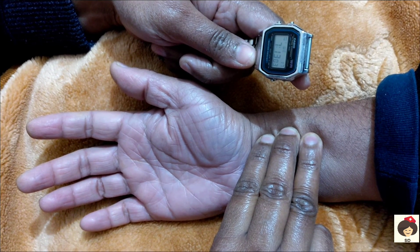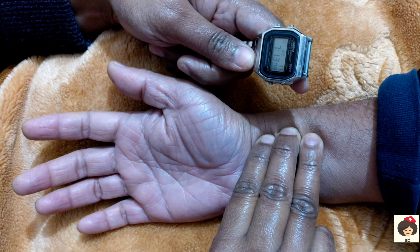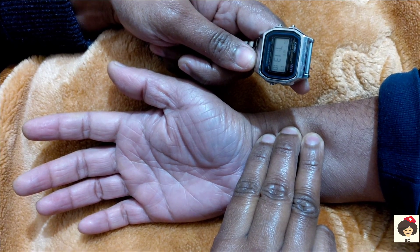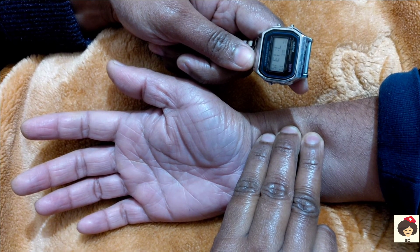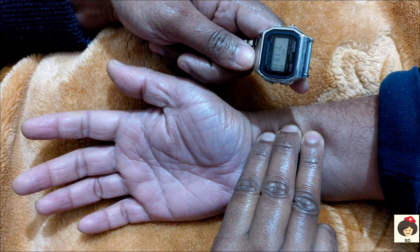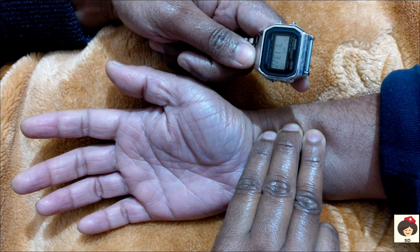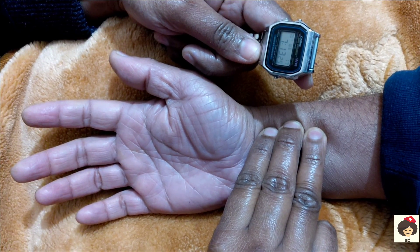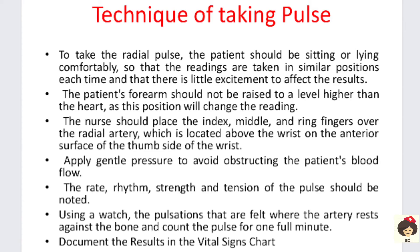While checking, note the rate, rhythm, strength, and tension of the pulse — all the characteristics. Using a watch, count the pulsations for one full minute. Do not count for 15 seconds and multiply by four. Count for the full minute. Then document the results in the vital signs chart.